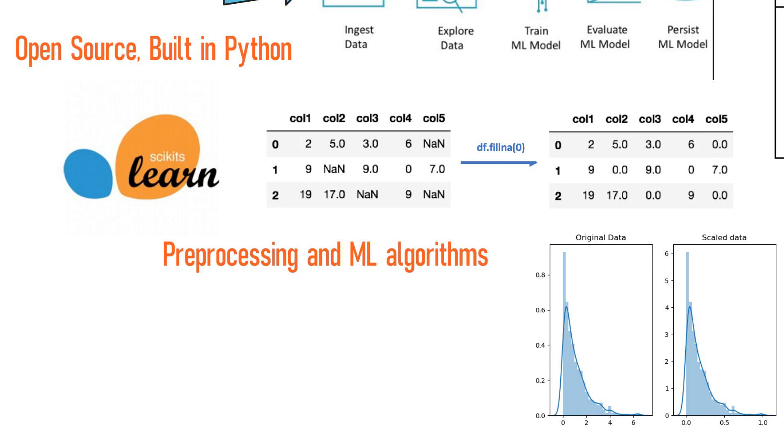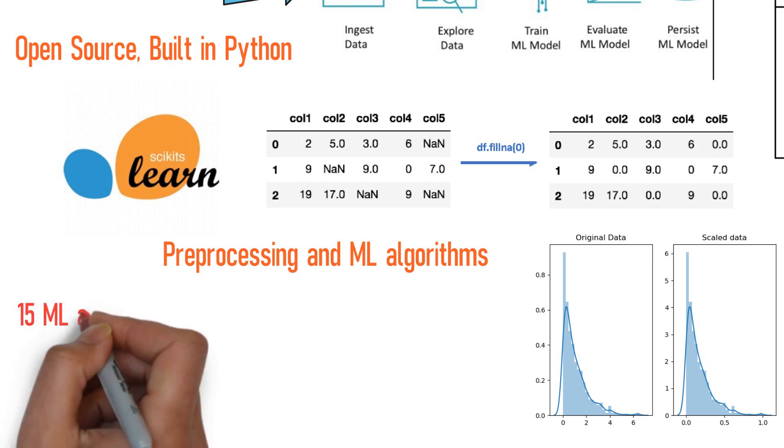Next, the pipeline applies a preprocessing algorithm and an ML algorithm. AutoSkLearn includes 15 ML algorithms, 14 preprocessing methods, and all their respective hyperparameters, yielding a total of 110 hyperparameters.